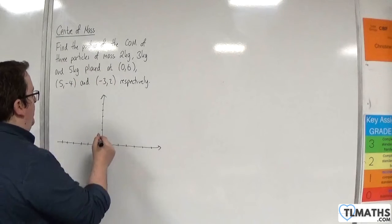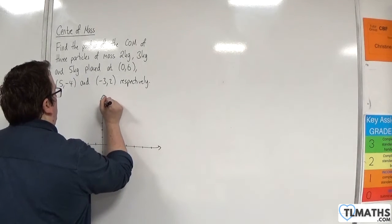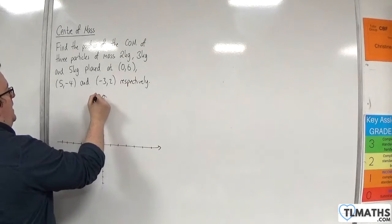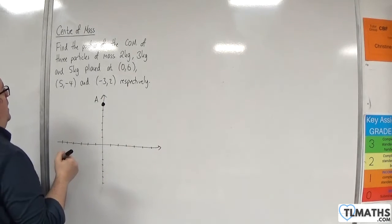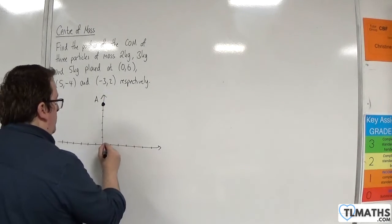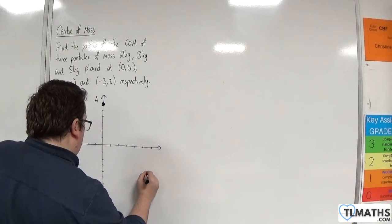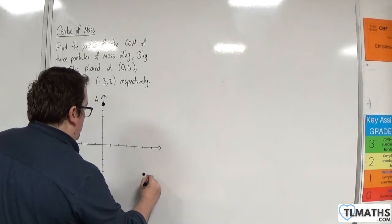Okay, so we've got 0, 6, which will be here, so that's my first particle, let's call that particle A. Okay, we have 5 minus 4, so somewhere here, so that's my particle B.